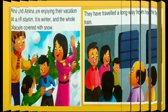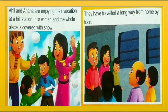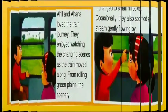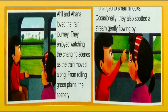Let's start our chapter with this picture story. Ahil and Ahana are enjoying their vacation at a hill station. It is winter and the whole place is covered with snow. They have traveled a long way from home by train. Ahil and Ahana loved the train journey and enjoyed watching the changing scenes as the train moved along.